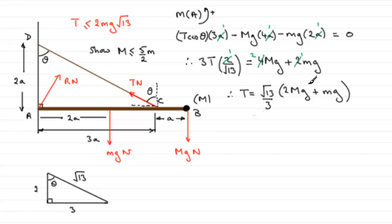Now we know that this quantity has to be less than or equal to 2Mg√13. So we know that, therefore, if we just put √13 over 3, we'll copy this all out again, 2 big Mg plus little mg.